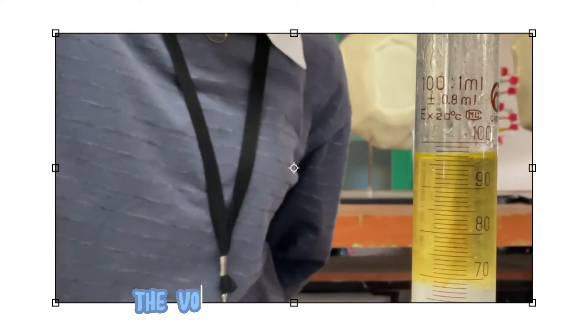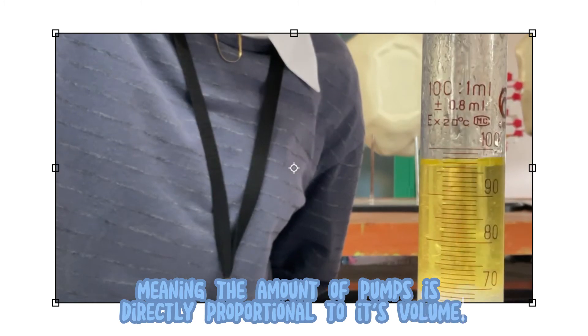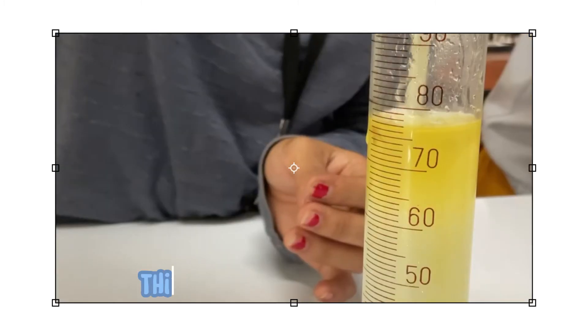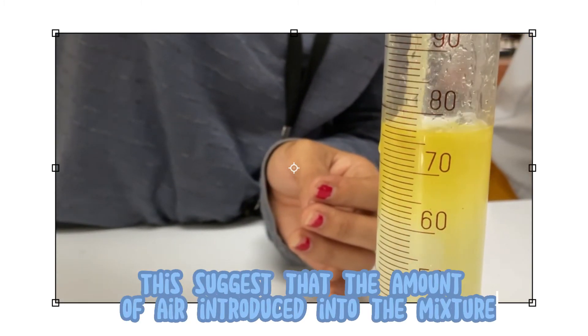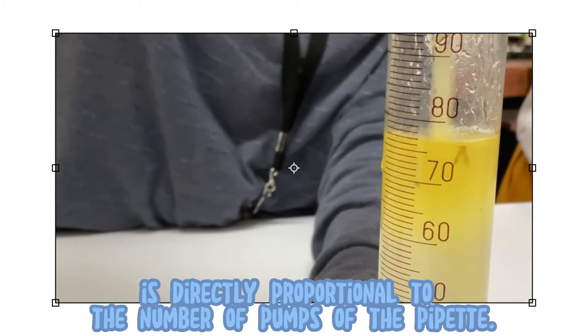We observed that as the amount of increasing air is introduced in the mixture, the volume continuously increases, meaning the amount of pumps is directly proportional to its volume. This suggests that the amount of air introduced into the mixture is directly proportional to the number of pumps of the pipette.